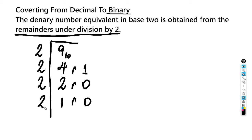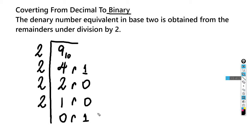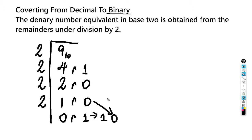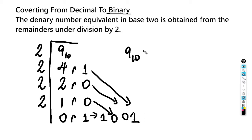Then we're going to divide this one by two. Based on this division, what we're actually going to do now is draw the number. We're going to take this one, zero, zero, one, but we actually start from the bottom to get the first number. So this one at the bottom is the first number, this zero is the second, this zero is the third, and this one is the fourth. So that means nine to the base 10 is actually equal to 1001 to the base two.